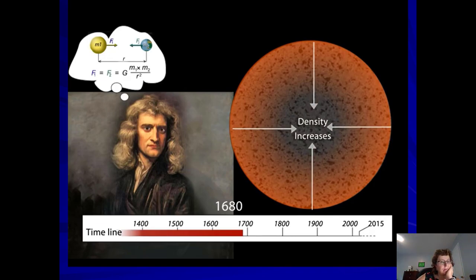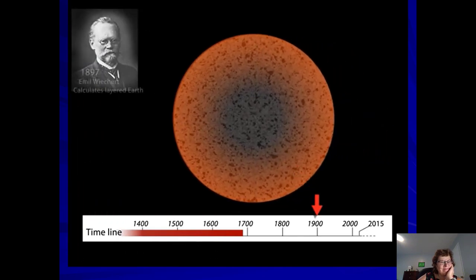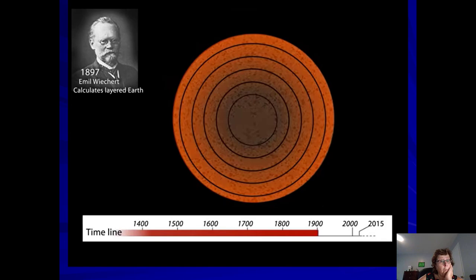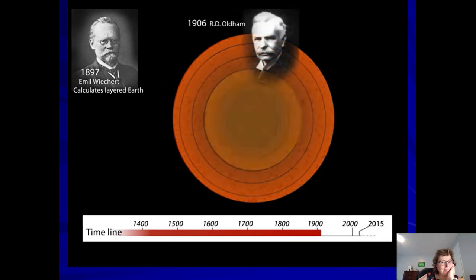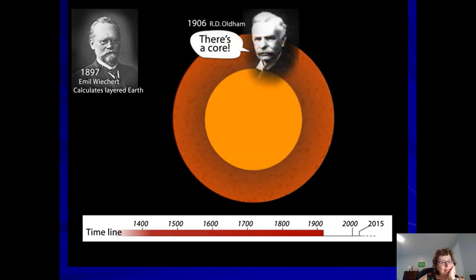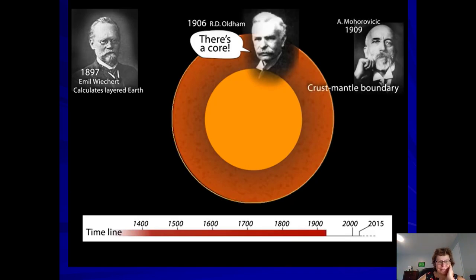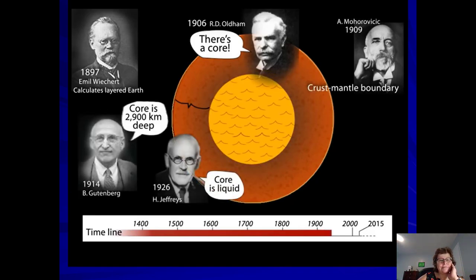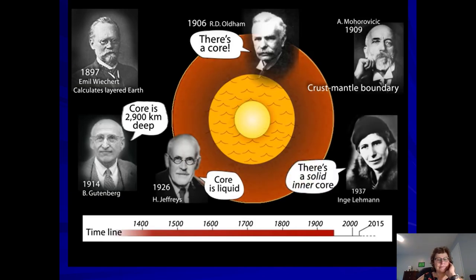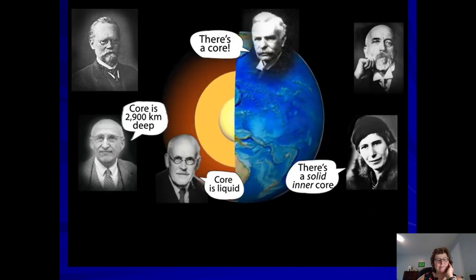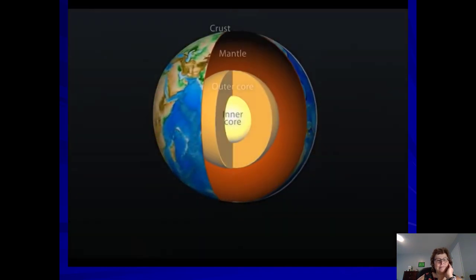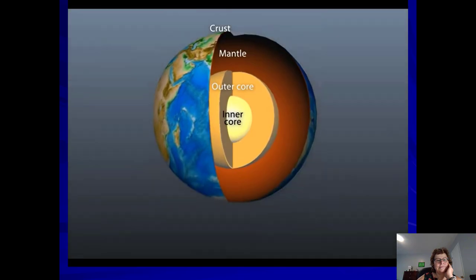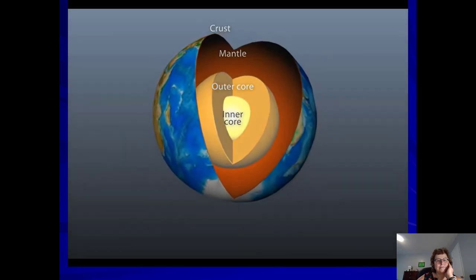Newton's estimate of the overall density of the Earth remains essentially unchanged today. In the early 1900s, scientists discovered they could use data from earthquakes as a method for looking deep beneath the surface. By understanding the travel times of different seismic waves to worldwide stations, scientists were able to calculate where boundaries occurred and what those boundaries represented. They thus determined that the Earth has three layers based on chemical composition: crust, mantle, and core.